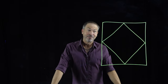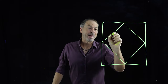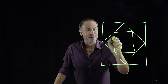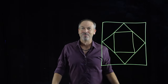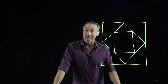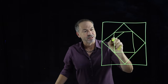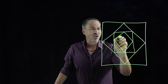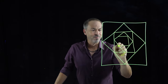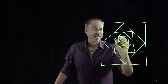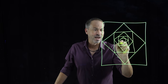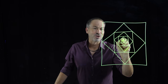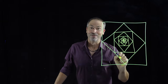Connect the midpoints of its sides to make a non-tilted square within that tilted square within the big square. Let's keep doing that — connecting midpoints to make a tilted square, then a non-tilted square, then a tilted square, then a non-tilted square, and keep doing this forever.